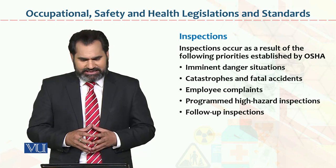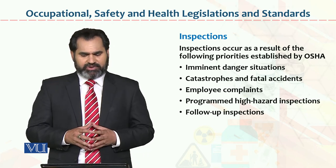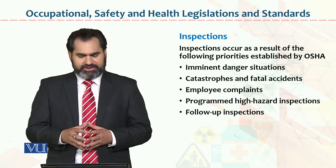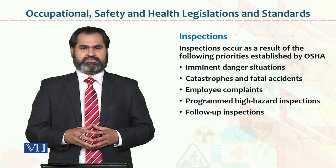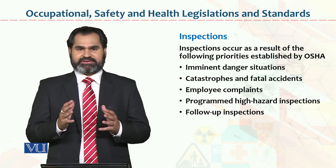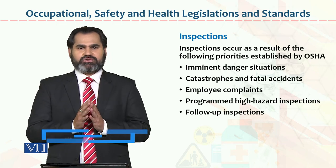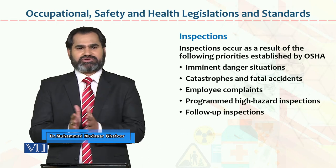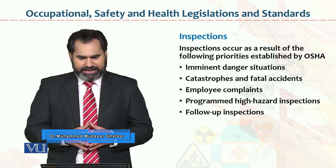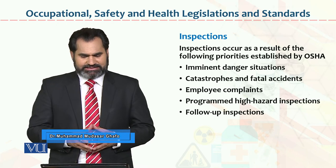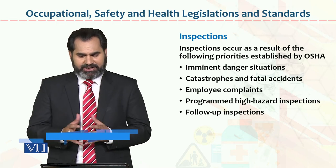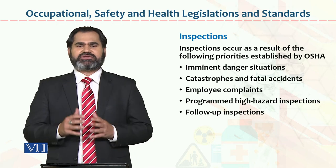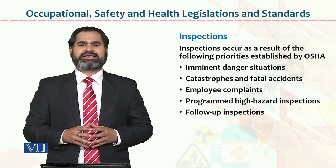Inspection occurs as a result of following priorities established by OSHA: Imminent Danger Situations, Catastrophe and Fatal Accidents, Employee Complaints, Programmed High Hazard Inspection, and Follow-up Inspection. If you look at these points, they are largely self-explanatory.